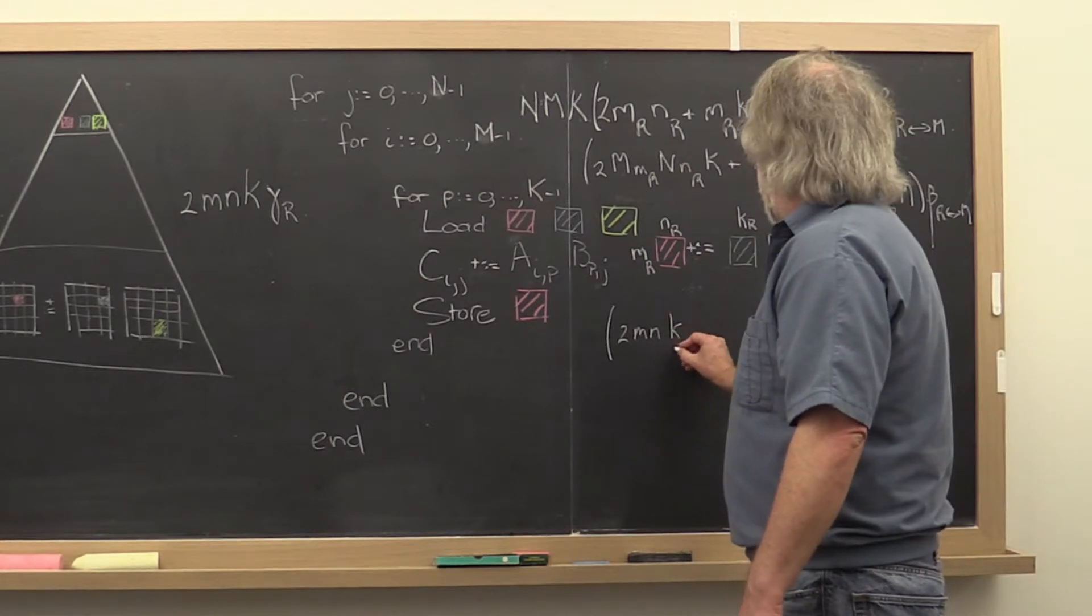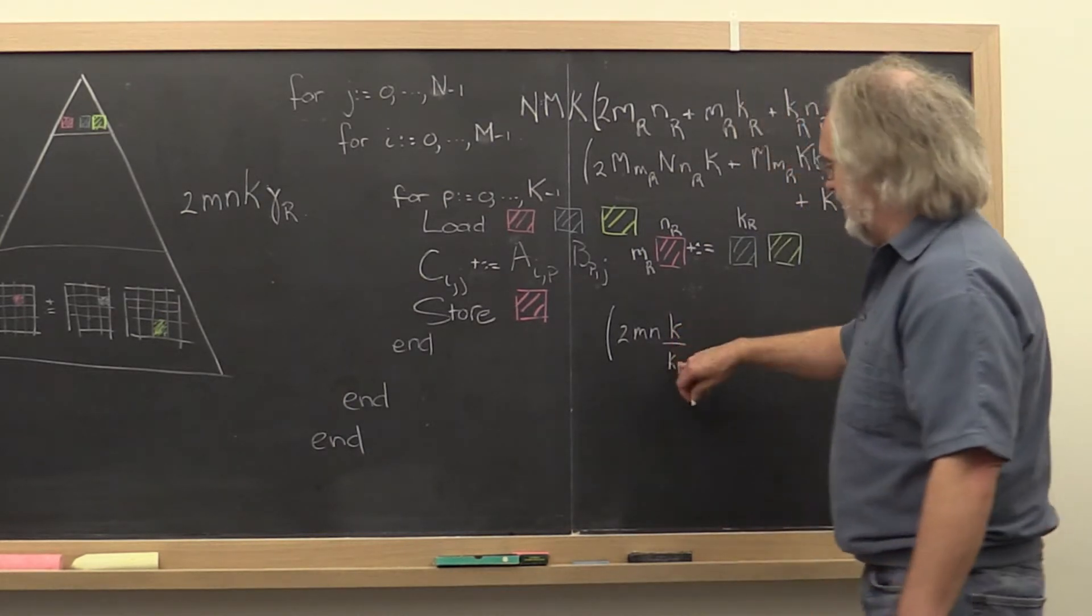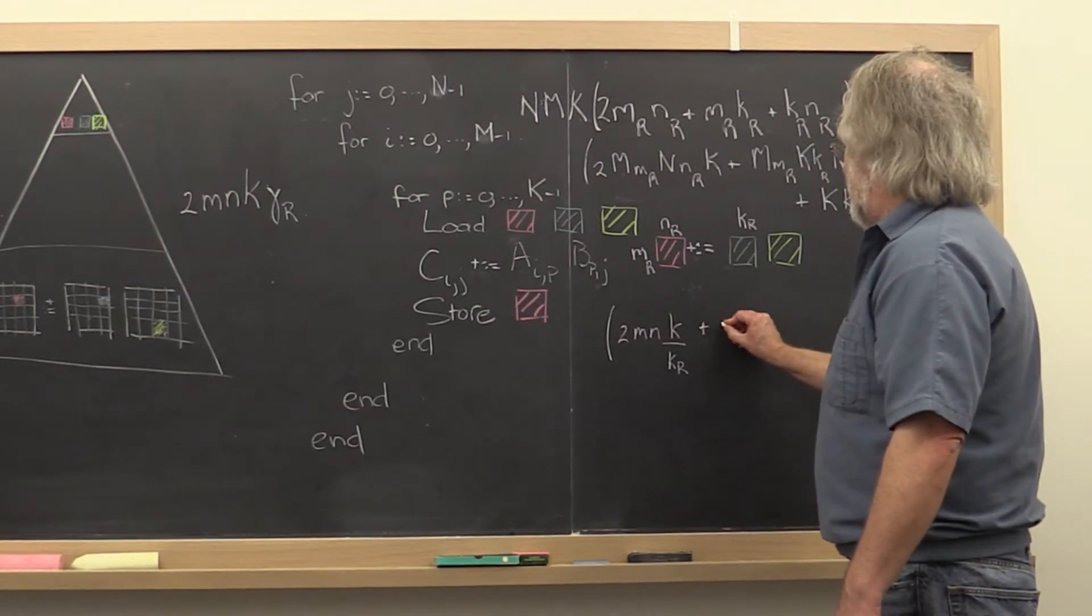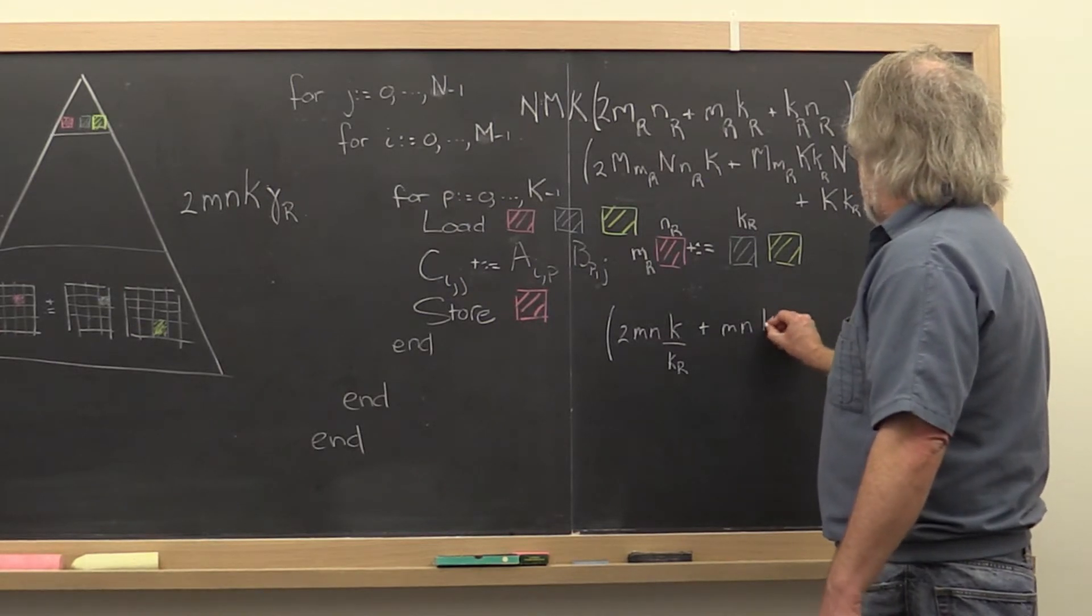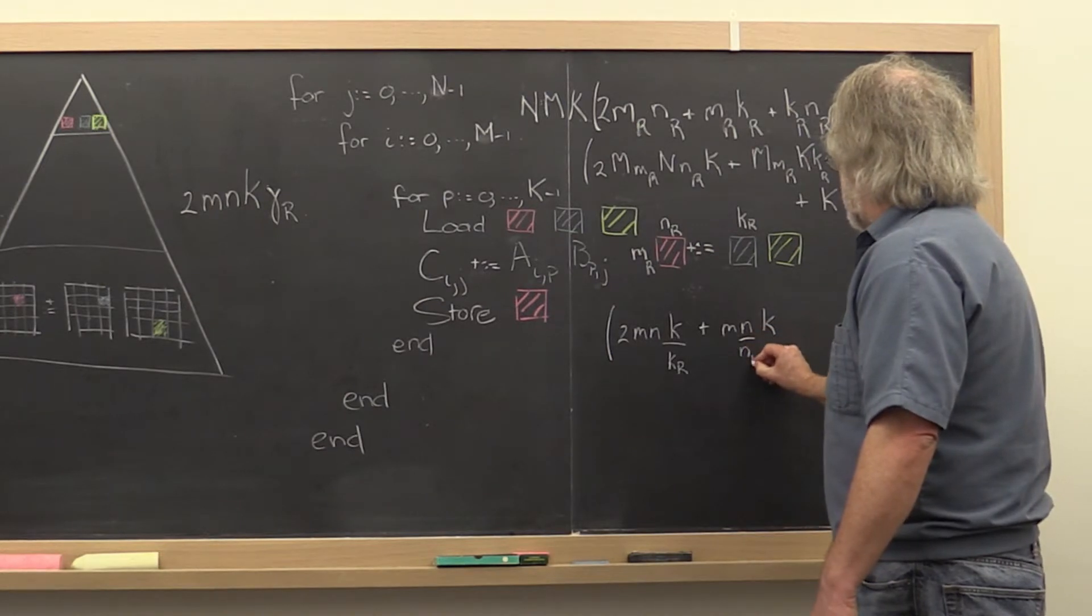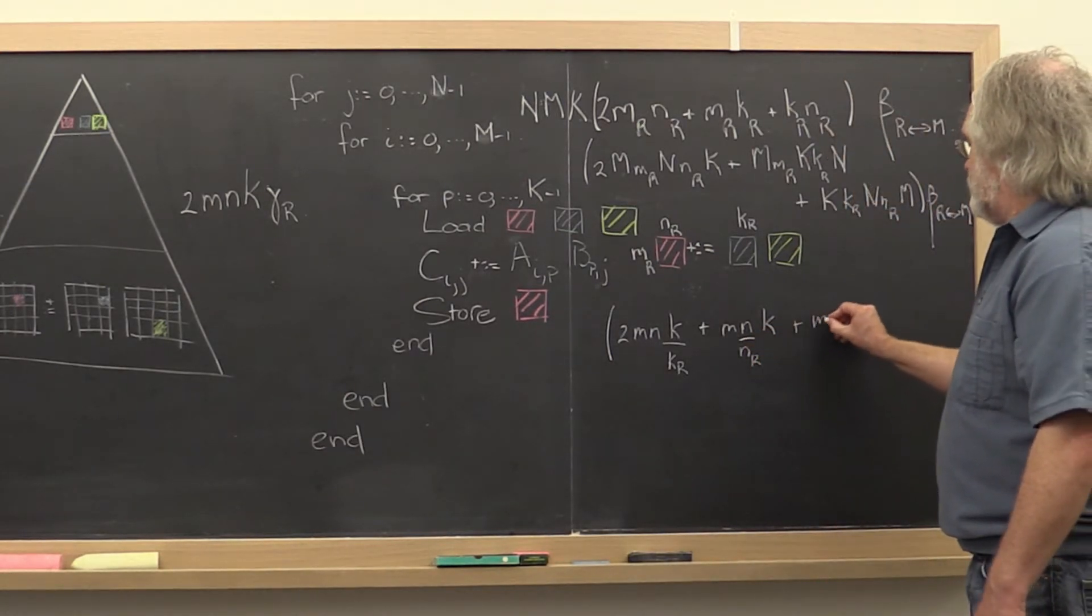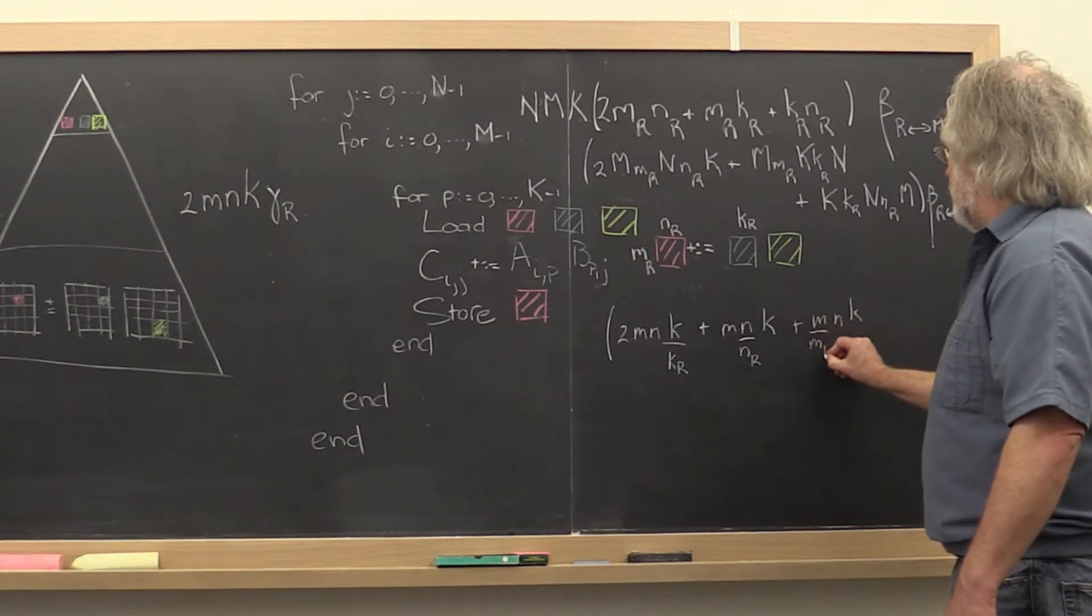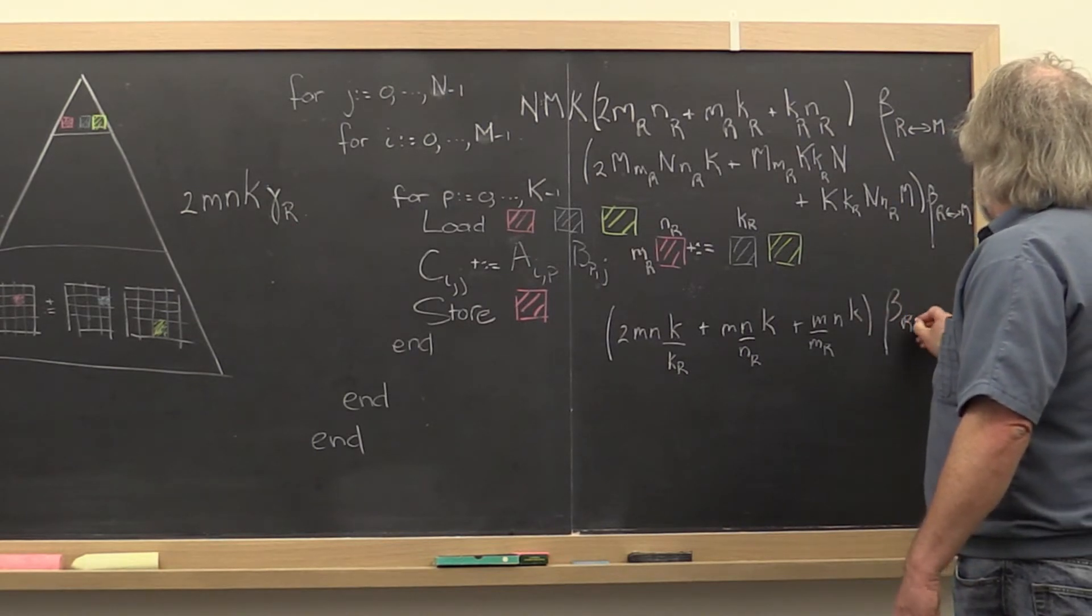k divided by kr, this is little k, little kr, plus m times n times k divided by nr plus m times n times k divided by mr times beta rm.